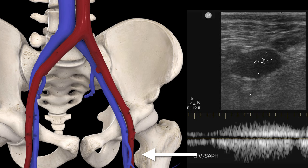Another hint for identifying iliofemoral DVT: normally you see respiratory phasicity in the proximal venous flow on ultrasound. If there is an obstruction in the left iliac vein that you can't visualize directly, it can blunt the flow more distally. If you see blunted flow compared to the other side, that should prompt further investigation — even if it doesn't completely rule in or rule out pathology.